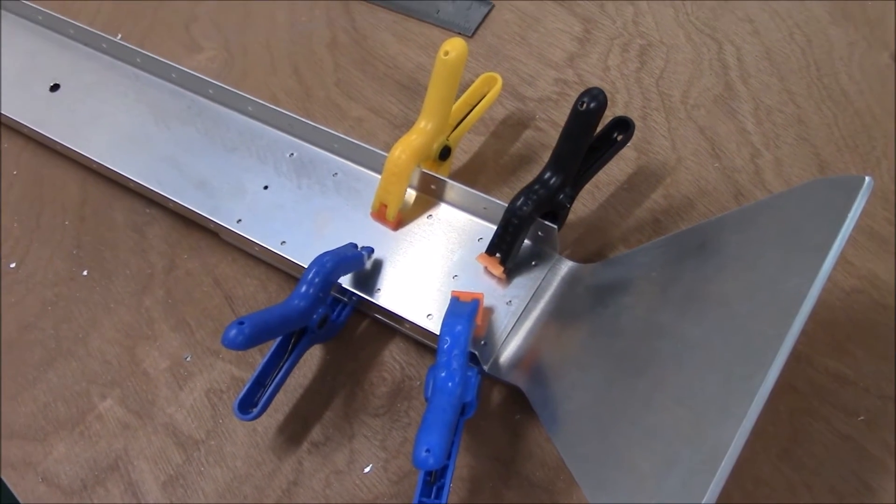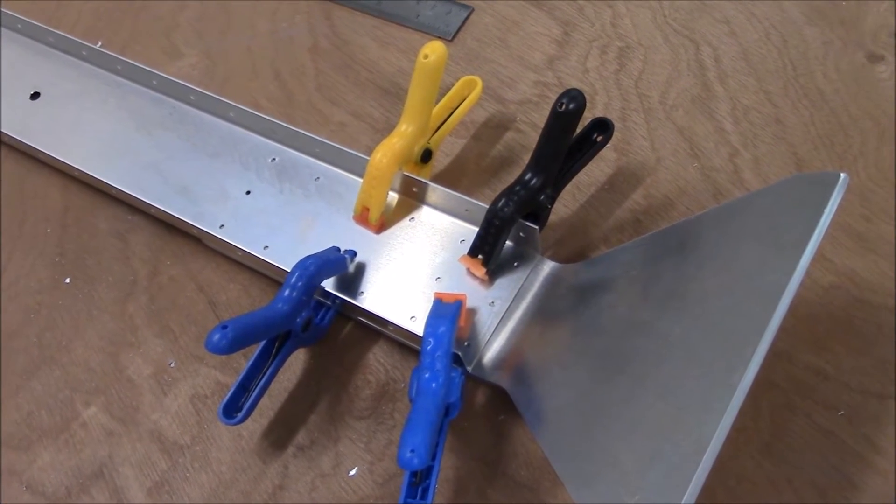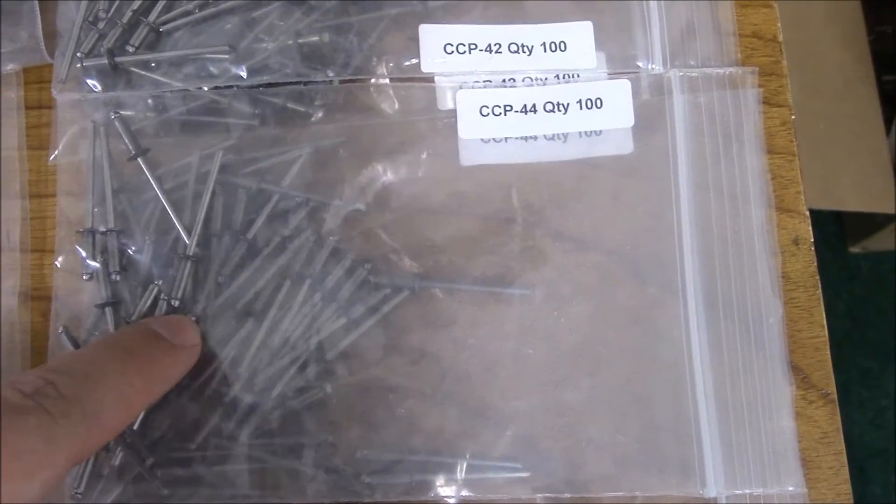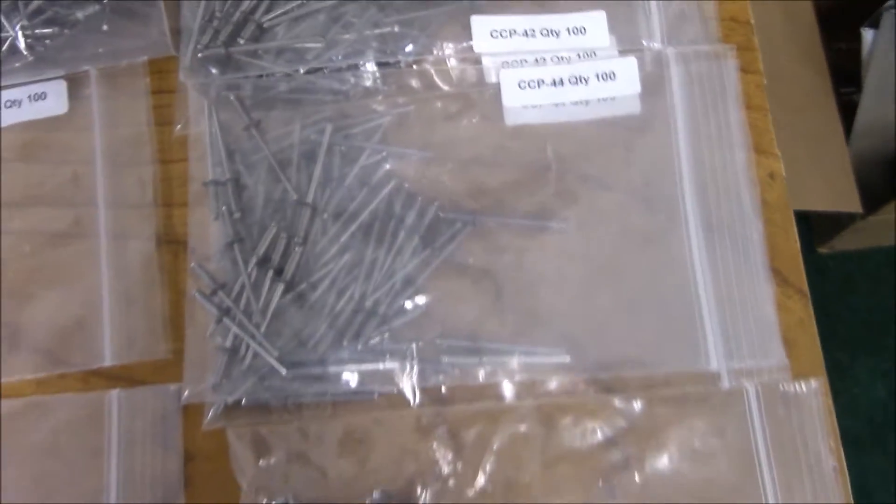I'm going to drill my first pilot hole and put a silver Cleco in, and then do a couple more pilot holes with silver Clecos. Then I'll drill it up to the proper size. This is going to be CCP-44 rivets, and these are a bit bigger than the 42s I've been using in other parts of the plane.